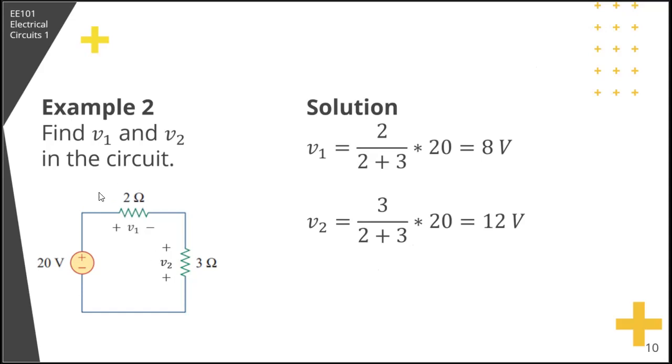V1 is equal to, the voltage drop across this is equal to its corresponding resistance over the sum of resistances. So 2 over 2 plus 3 times the voltage across, that's 20. So 20 over 5 is 4 times 2, that's 8.